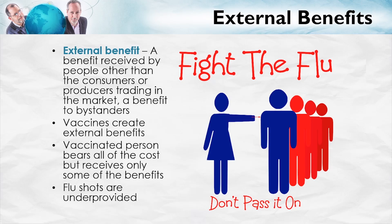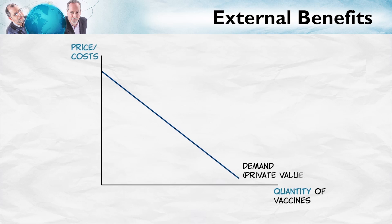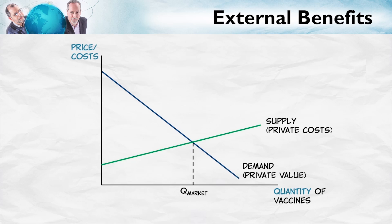Let's show that in a diagram. We'll put quantity of vaccine on the horizontal axis and price and costs on the vertical axis. We get the usual market equilibrium. The issue here is that this demand curve includes only the private benefits of the flu shot — mostly the fact that people don't themselves want to get the flu, so they value the shot because it reduces their own probability of getting the flu.